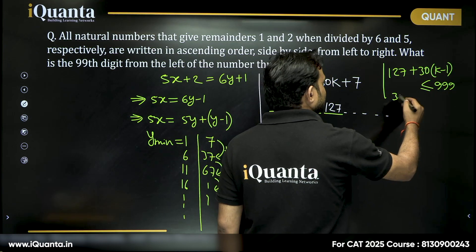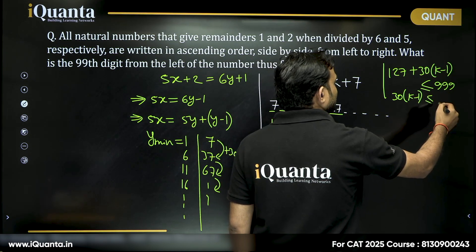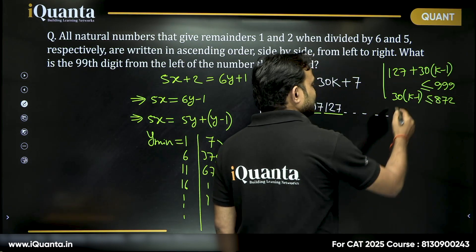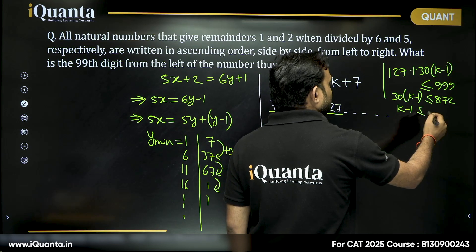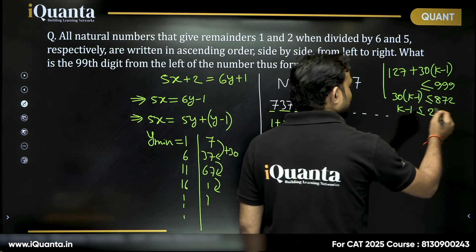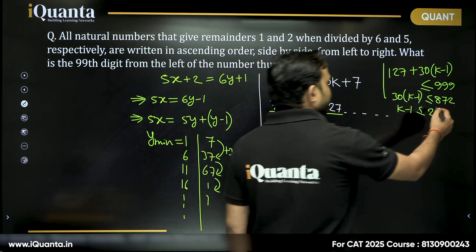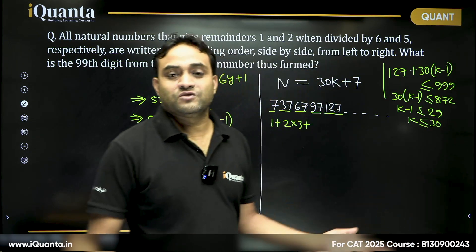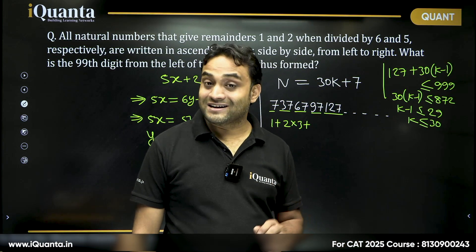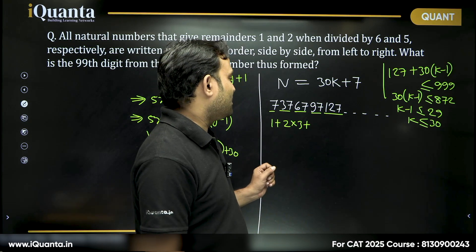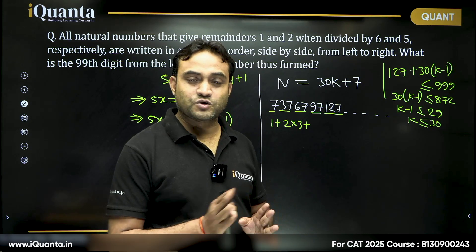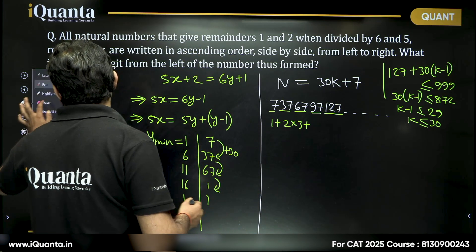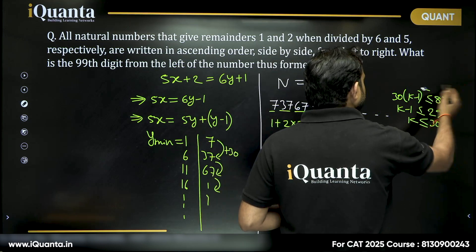From there, we can say 30 times k minus 1 should be less than equal to 872. In that case, k minus 1 will be less than equal to 29. There are 900 three-digit numbers and the gap is 30. Between two consecutive numbers, the gap is 30. 900 by 30, we are getting 30 three-digit numbers. If we are getting 30 three-digit numbers,